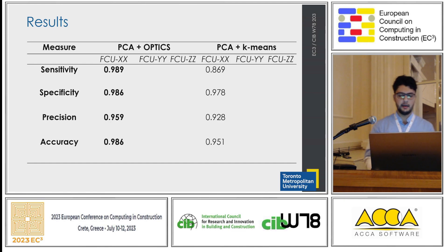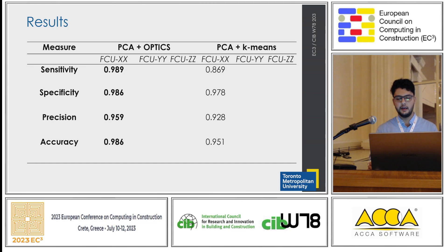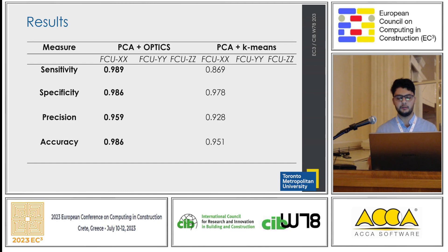In this table, we can see very satisfying results. It is a summary of the results comparing OPTICS and k-means. The null accuracy was calculated as 0.75, and these results demonstrate that PCA with OPTICS outperforms PCA with k-means in all aspects.